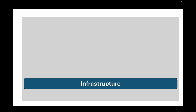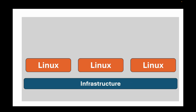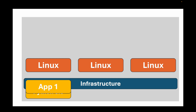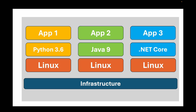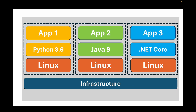Let's look at how virtual machines differ from containers architecturally. In this diagram we have infrastructure with three Linux virtual machines running on the same infrastructure. Each virtual machine has an app — a Python app, a Java app, and a .NET Core app — each running on an independent Linux operating system with its own kernel. Isolation is provided at the infrastructure level.